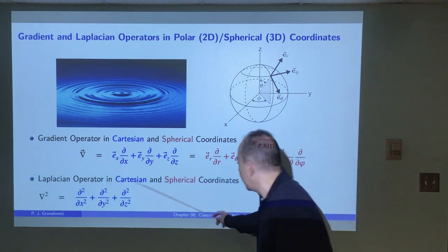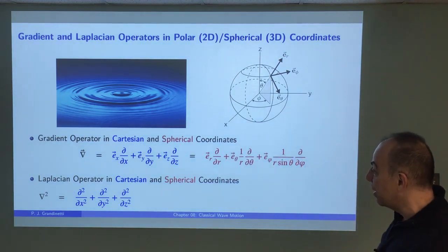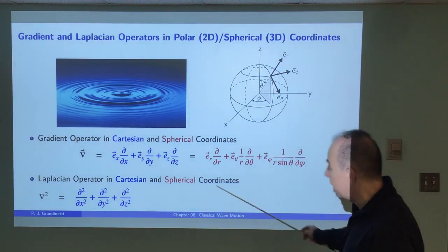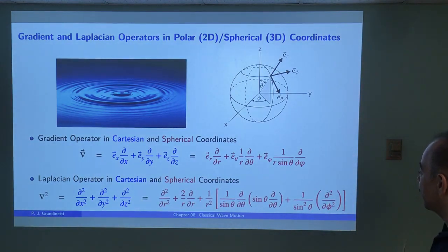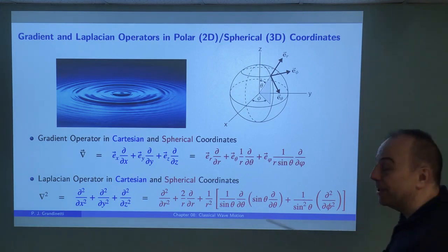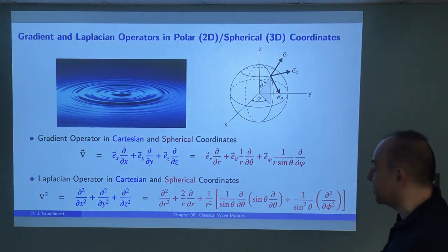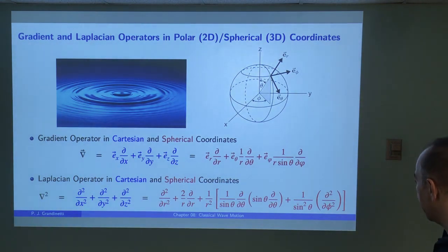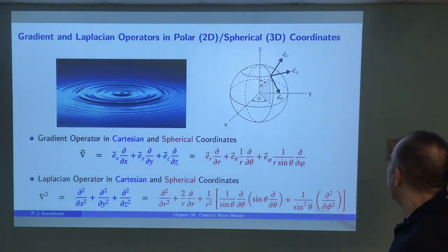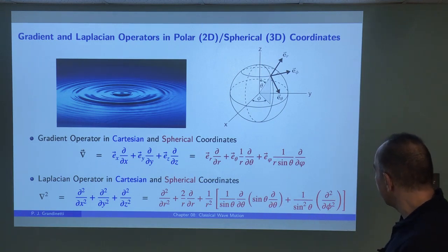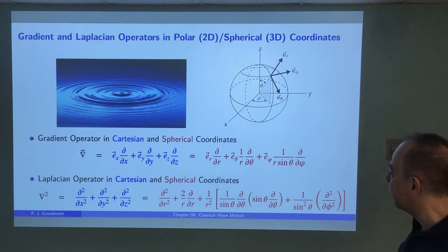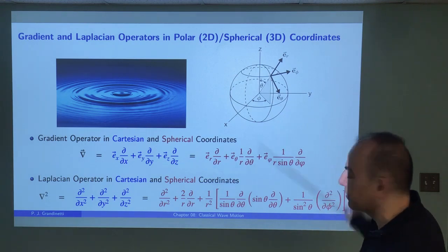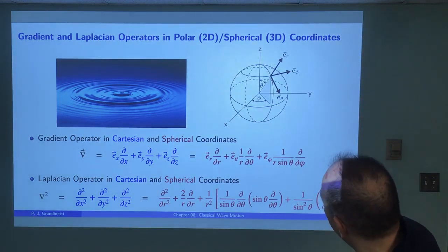The Laplacian operator, which in Cartesian coordinates has a familiar form, transforms into spherical coordinates and looks like this. That's pretty daunting if you're seeing it for the first time, but we're going to use this expression over and over again throughout the semester, particularly when we get into quantum mechanics. For the polar version, you simply set theta equals 90 degrees — that term goes to 1, this term goes away — and you have the polar Laplacian.